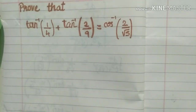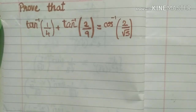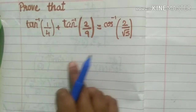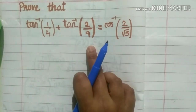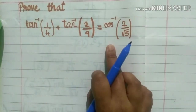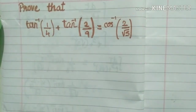Hello friends, I hope you are doing well. In this video, we have to prove that tan inverse of 1 by 4 plus tan inverse of 2 by 9 is equal to cos inverse of 2 by root 5.